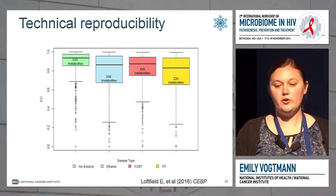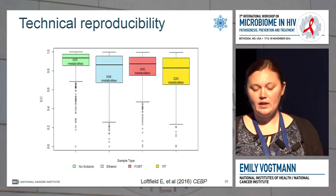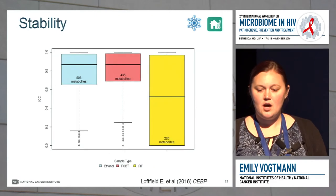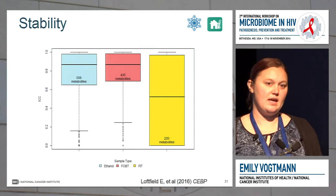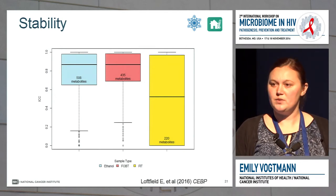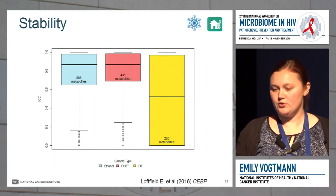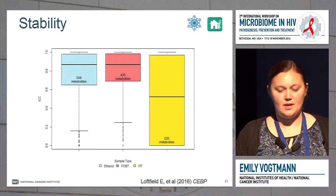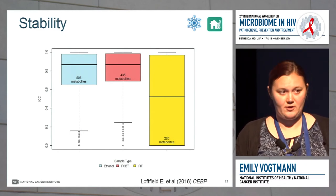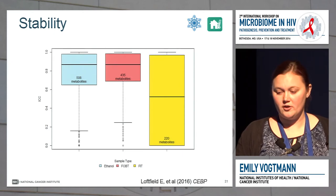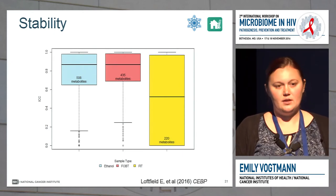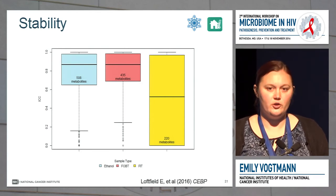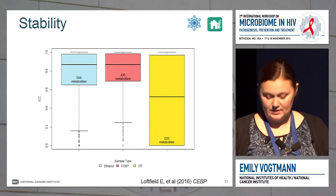For technical reproducibility, these samples look to be pretty similar, so one sample should be sufficient. But when we looked at stability — samples left at room temperature for four days versus frozen immediately within the same individual — the only two samples that appeared very stable were those preserved in 95% ethanol and those using the FOBT card. The FIT tube had variable ICCs across different metabolites; it didn't look like the metabolites were very stable in the FIT tubes.